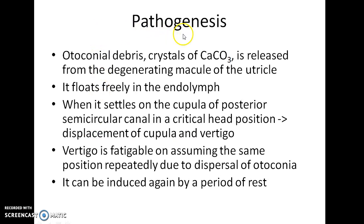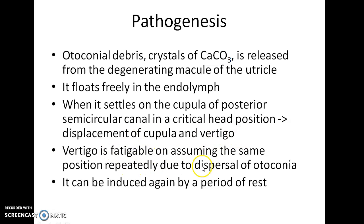What is the pathogenesis of this disease? Otoconial debris — crystals of calcium carbonate — is released from the degenerating macula of the utricle and floats freely in the endolymph. When this otoconial debris settles on the cupula of the posterior semicircular canal in a critical head position, it results in displacement of the cupula, causing vertigo. Vertigo is fatigable on assuming the same position repeatedly due to dispersal of otoconia, and can be induced again by a period of rest.